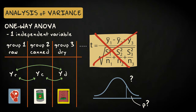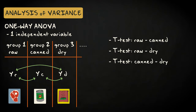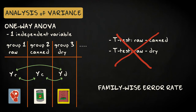The next thing you might think of is to perform three pairwise t-tests comparing two group means at a time. This is not a good idea, because the family-wise error rate will be inflated.